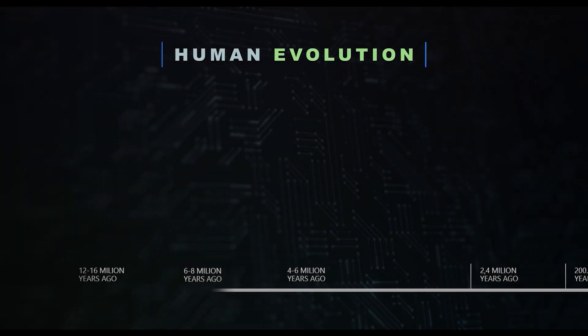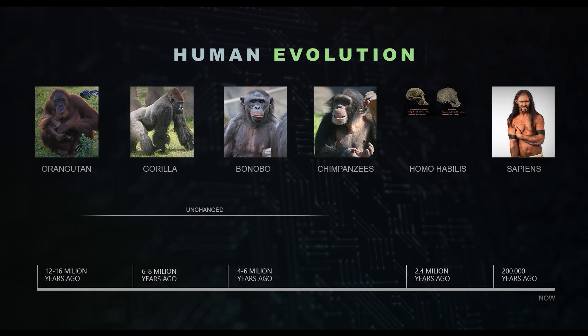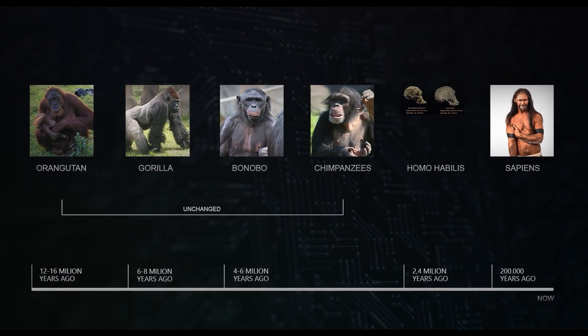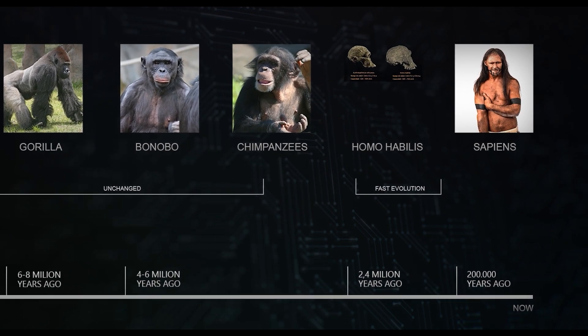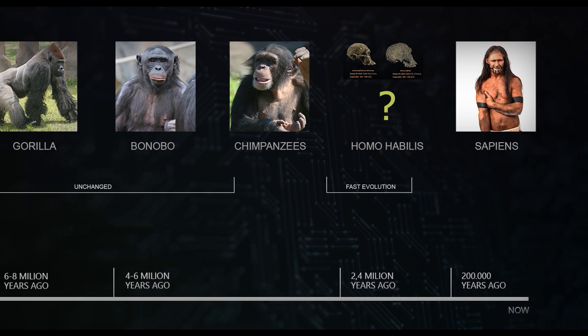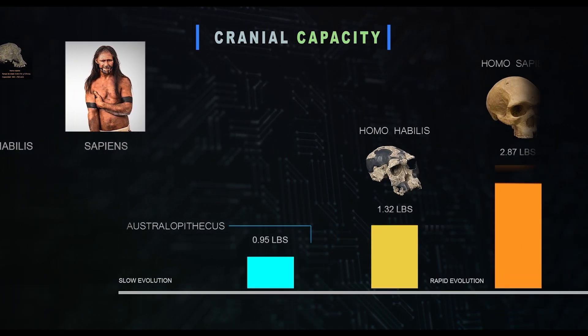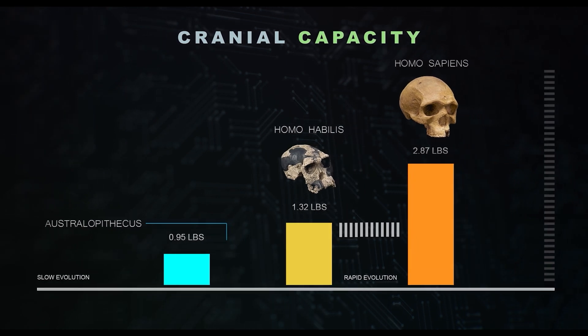Moving on to human evolution, we see how primates remained almost unchanged for many millions of years. Yet in a short genetic time, the hominins appear to have undergone radical changes. Between the species Australopithecus and Homo habilis, the increase in brain capacity is dramatic and disproportionate when measured on a genetic timeline.